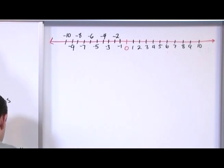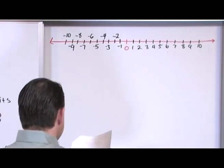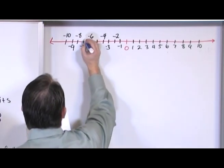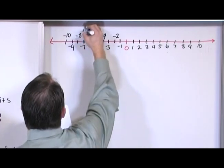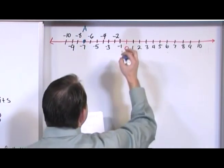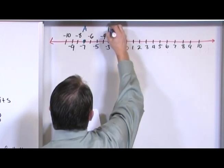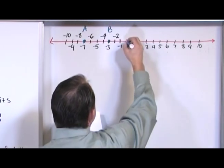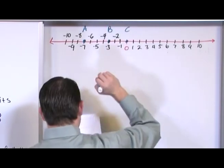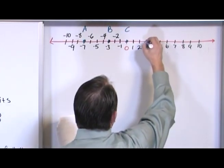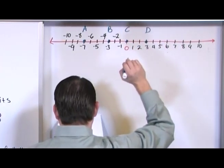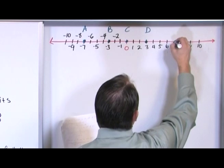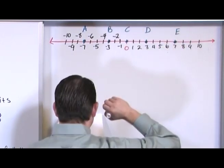So let's label some points here. Let's say A is at negative seven. So I'm going to put A right there. Let's say B is at negative three. Right there. Let's say C is at zero. Let's say D is at three. Let's say E is at seven. And let's say F is at ten.